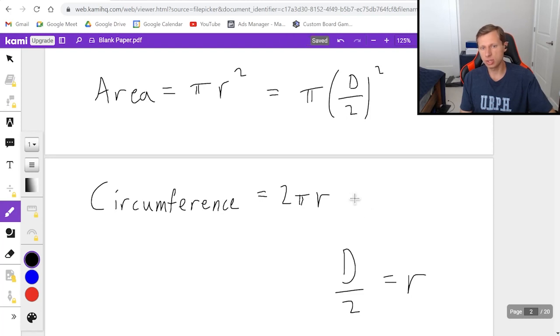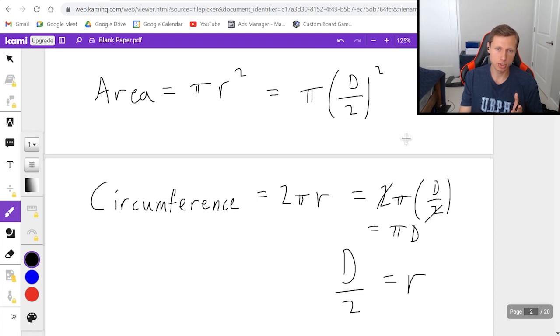Or if you want to do circumference, you can say 2 pi times radius is D over 2. The 2s cancel, and you just get pi times the diameter. So there we go, that's two equations you can use. I'm going to be just using the radius ones today, because that's what I'm more comfortable with. But technically, you can use either form.